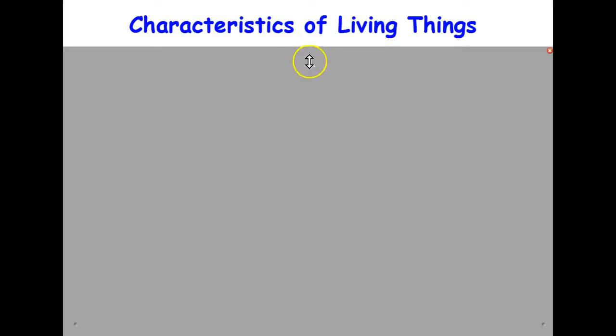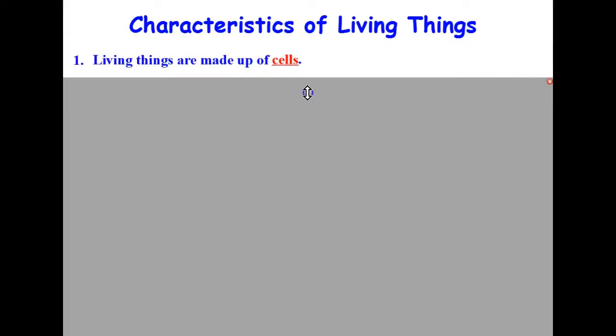The first characteristic of living things is that all living things are made up of cells. Cells are the smallest units considered fully alive. Cells can grow, respond to their surroundings, and reproduce. Even though cells are small, they are complex and very organized.